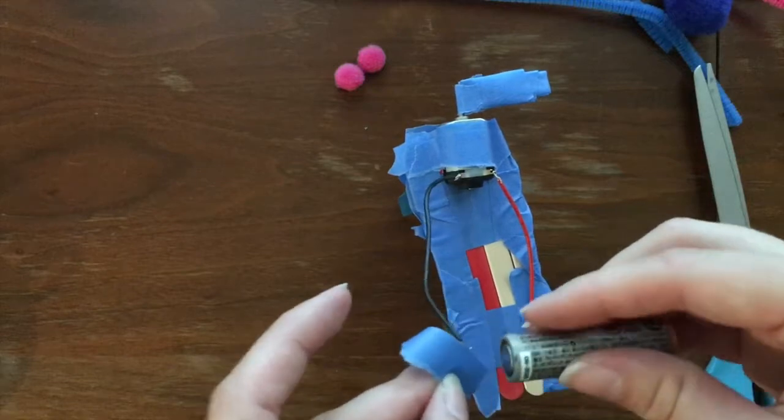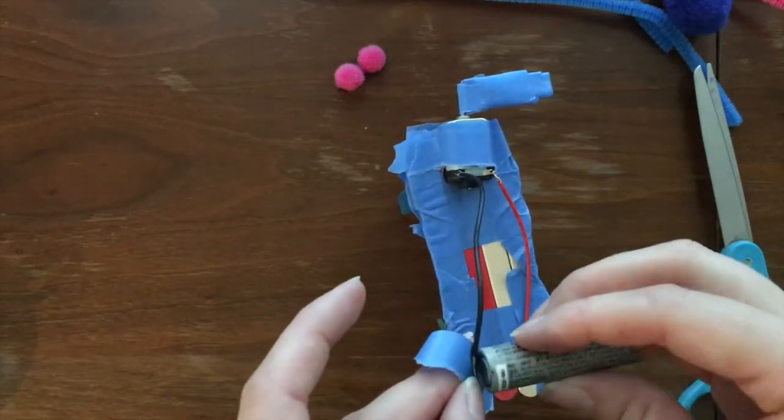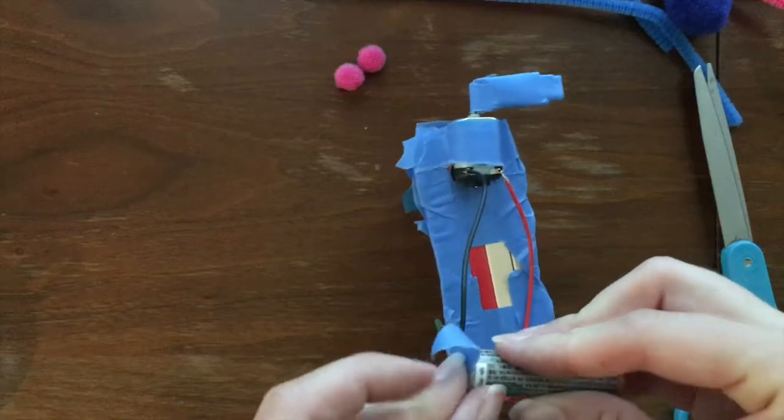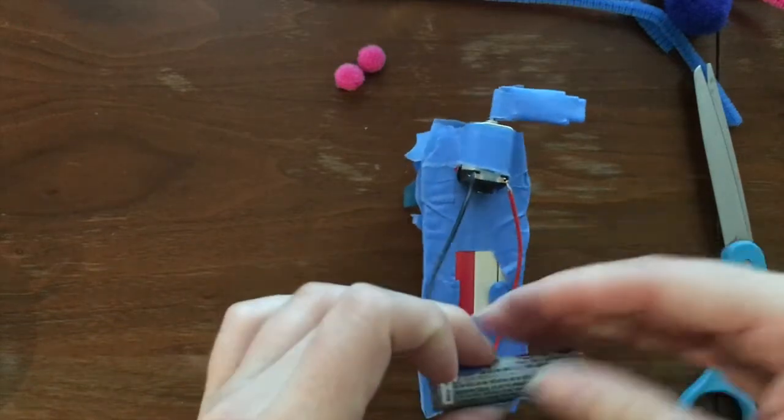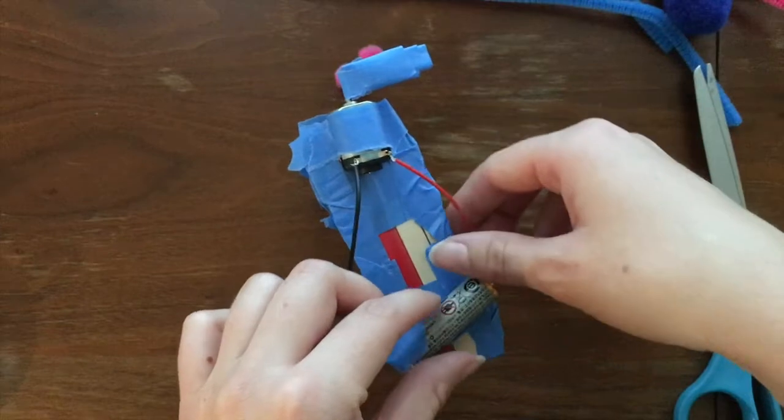Make sure that it's the wire part. The metal part of the wire is fully touching the metal part of one side of the battery. You can go ahead and tape the battery down now.